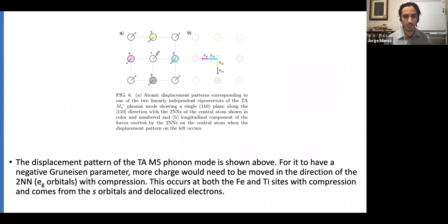This is the M5 phonon mode and its displacement pattern. These are secondary neighbors in the body-centered cubic base structure. When this atom moves in this direction, these forces are exerted by the other atoms on it, and the result is that it will move it back, so this is a stable mode.